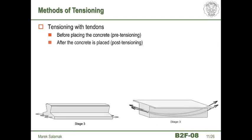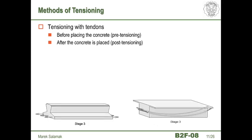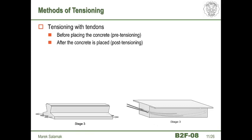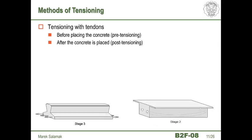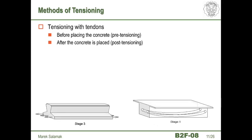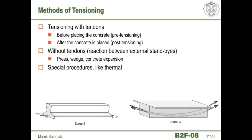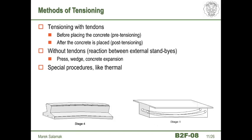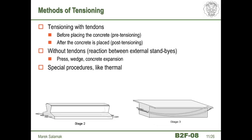The second method is post-tensioning, in which we stress tendons after laying concrete. In the first phase, we install reinforcement and empty ducts for pre-stressing cables on the scaffolding, and then lay the concrete. After achieving sufficient compressive strength, we put the tendons into the hollow channels and stress them. After anchoring, the system is self-supporting and we can remove the formwork and scaffolding. We can also compress without tendons using the reaction between retaining blocks, wedges, or expansive concrete, or special thermal procedures as the wheelwright or cooper did.